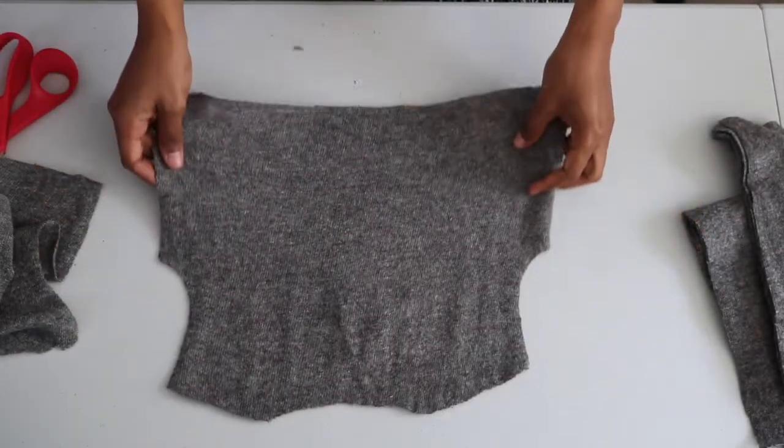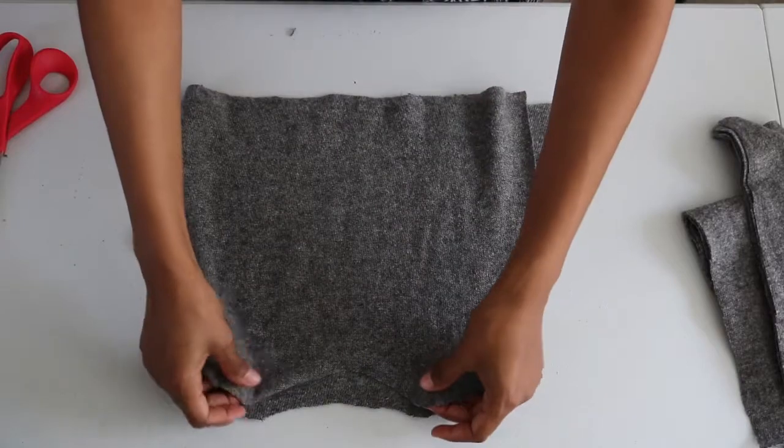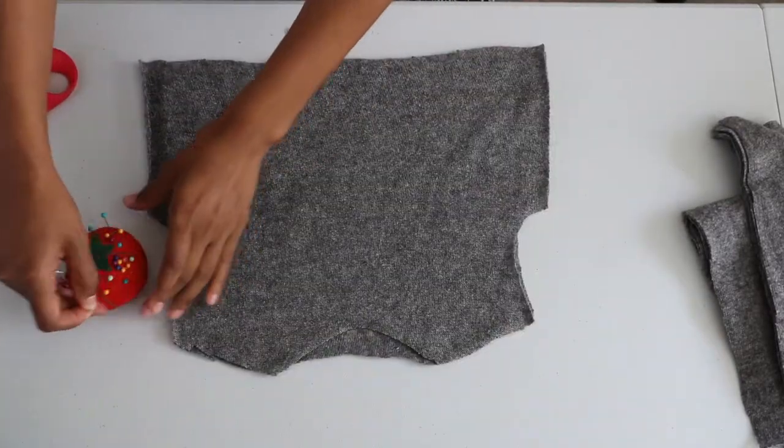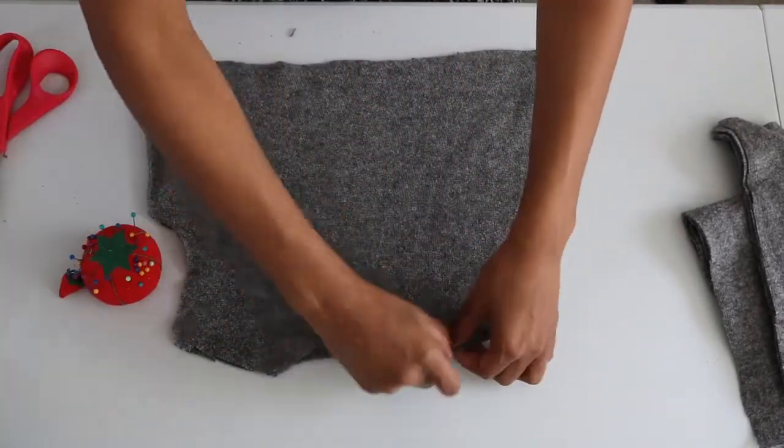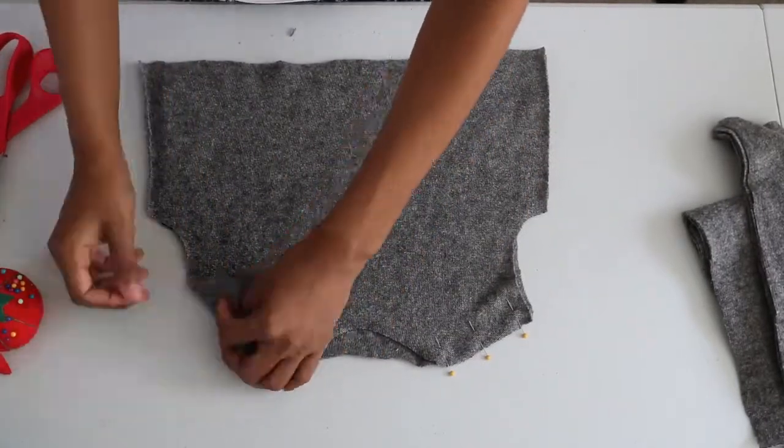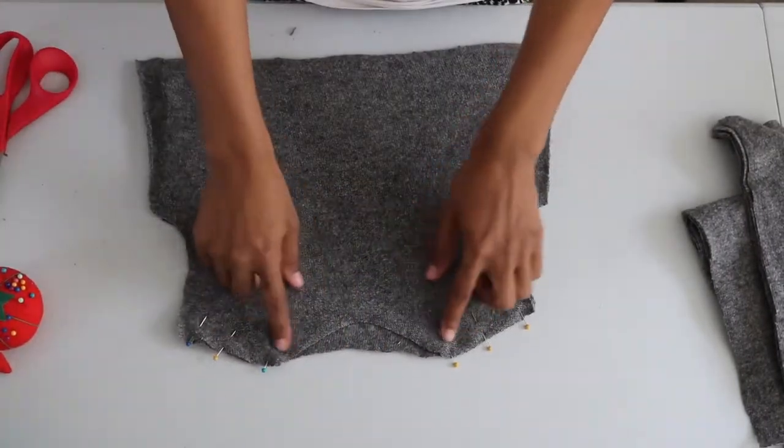Now for this sweater, I laid the back side face up and the front face down. Then I went ahead and pinned the shoulder lines down and then sewed that down.